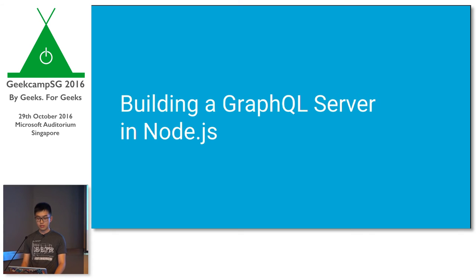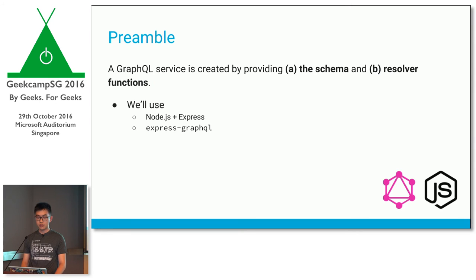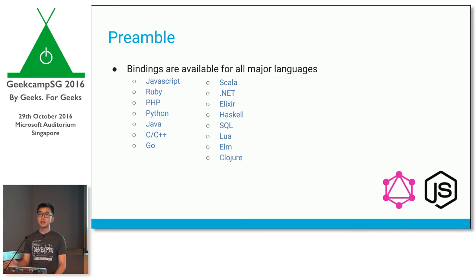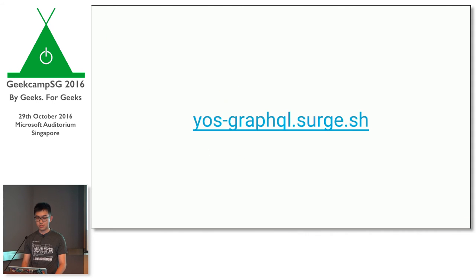To make it more concrete, let's look at an actual GraphQL server written in Node. To create a GraphQL server you need two things: a schema, which is a description of your business domain and the objects in your application, and resolver functions, which tell GraphQL where to pull the data from. For this example we're using Node and Express, but bindings are available in all major languages. We'll be looking at three files: package.json, server, and schema.